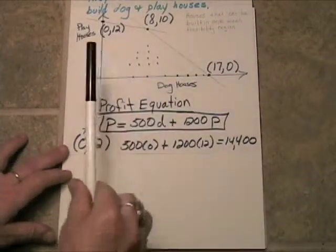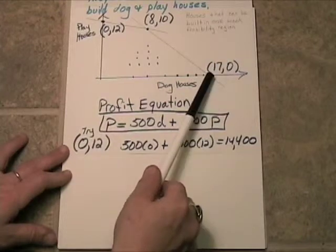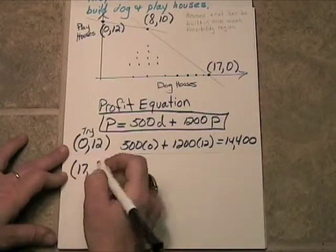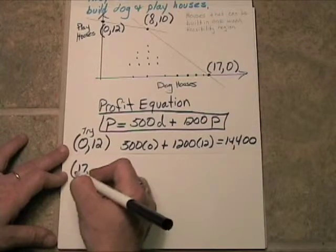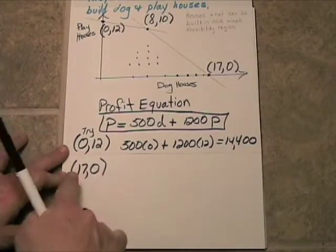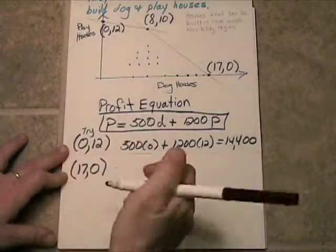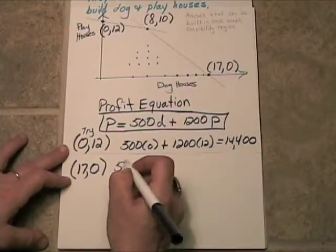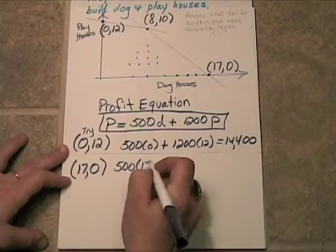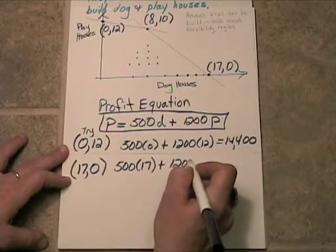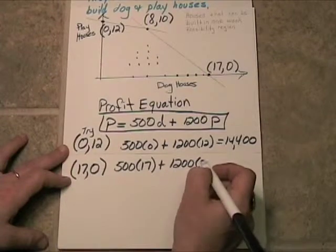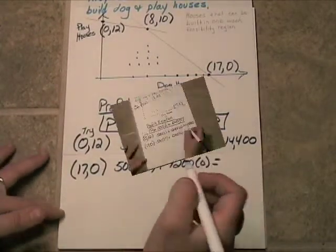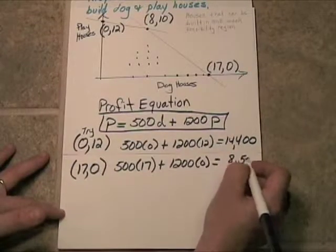Now, let's see what would happen if we picked this one over here. 17 playhouses, or excuse me, 17 dog houses, but no playhouses. Now, see here, there are more, so maybe this will give us the maximum. Alright, so it would be 500 times 17 plus no playhouses, so no $1,200 profits. And that's going to generate $8,500 in profit. So it looks like this is going to be the maximum, but there's still one other vertex to check.